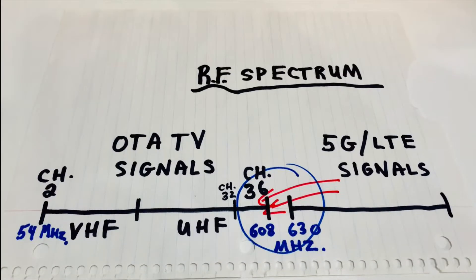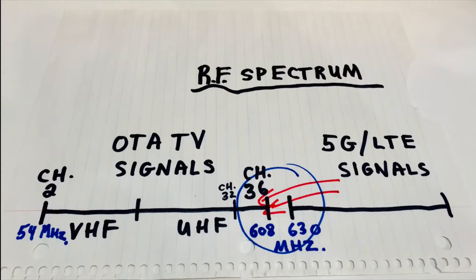Without getting too technical, over-the-air TV signals broadcast from about 54 to 608 megahertz, and cell phone signals are very close to that. LTE 5G signals probably start broadcasting around 630 megahertz, so realistically they're only about 20 megahertz away — which is 3 or 4 TV channels worth of frequency away from UHF TV channels.